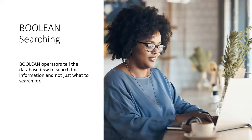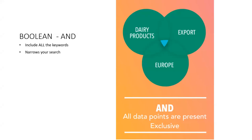When you're searching in databases, you can also use Boolean searching. Boolean operators tell the database how to search for information, not just what to search for. These operators are named for their inventor, George Boole, and can be used in almost any kind of searchable database. When you connect your keywords with AND — for example, by typing 'dairy products AND export AND Europe' into a search box — your search results will contain items that include all the keywords you entered. Using AND helps make your searches more specific and usually reduces the number of search results.